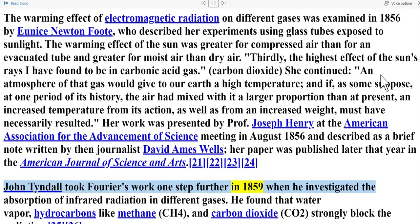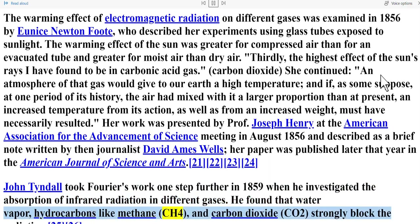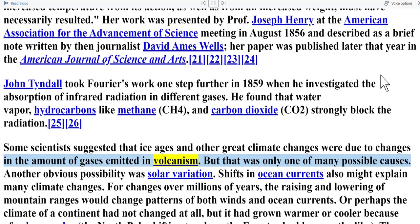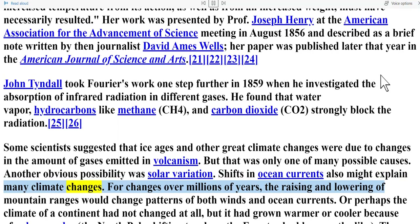John Tyndall took Fourier's work one step further in 1859, when he investigated the absorption of infrared radiation in different gases. He found that water vapor, hydrocarbons like methane (CH4), and carbon dioxide (CO2) strongly block the radiation. Some scientists suggested that ice ages and other great climate changes were due to changes in the amount of gases emitted in volcanism, but that was only one of many possible causes. Another obvious possibility was solar variation. Shifts in ocean currents might also explain many climate changes, and over millions of years the raising and lowering of mountain ranges would change patterns of both winds and ocean currents.